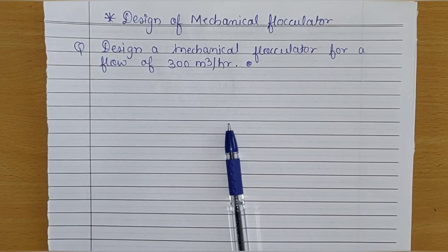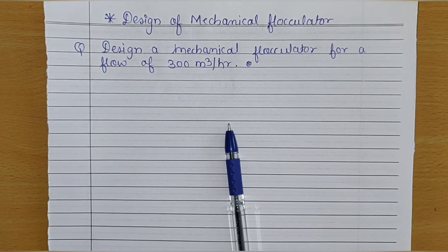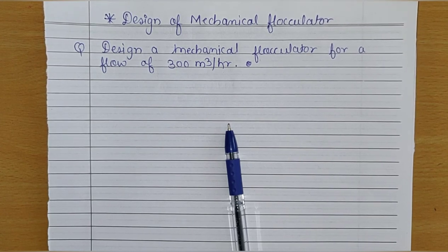Hello Learners, welcome back for the new video. In this video we will design a mechanical flocculator for a flow of 300 meter cube per hour.